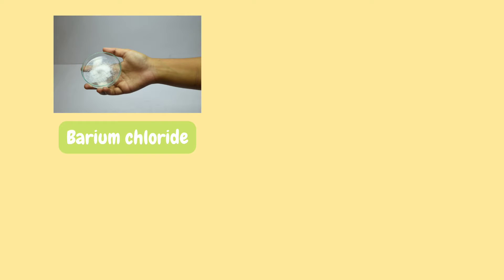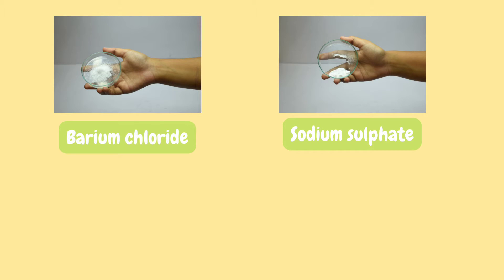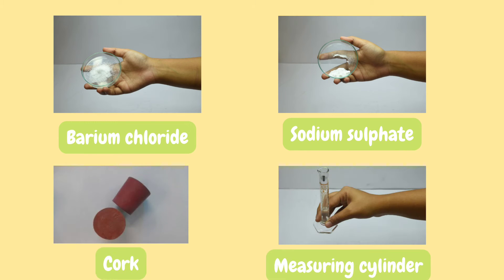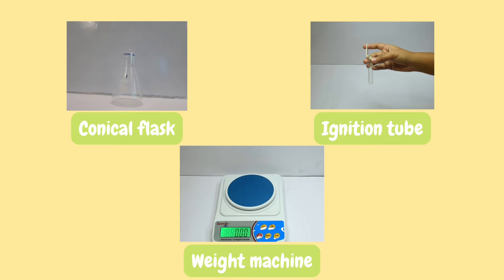For the activity, we will need barium chloride, sodium sulfate, cork, measuring cylinder, a clean conical flask, an ignition tube which is tied with a thread, and a digital weight machine.